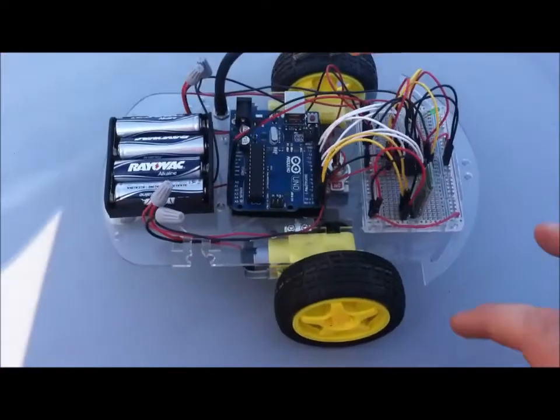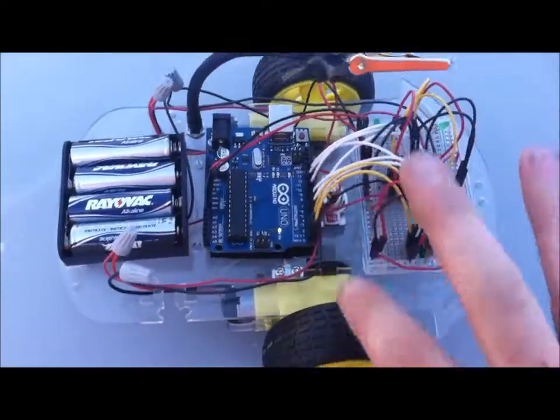Alright, here's some footage of me driving it. Turn the switch on. There's my app. Choose device, HC06. Alright, it's connected.